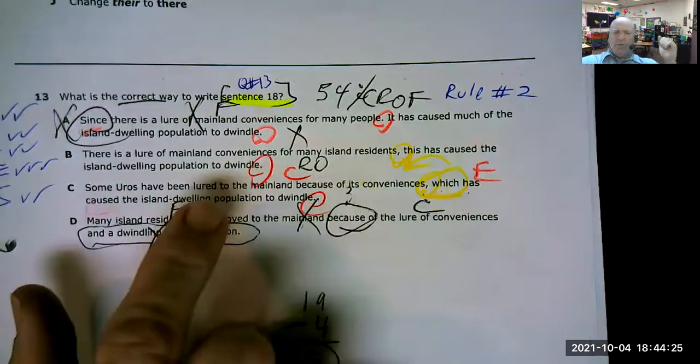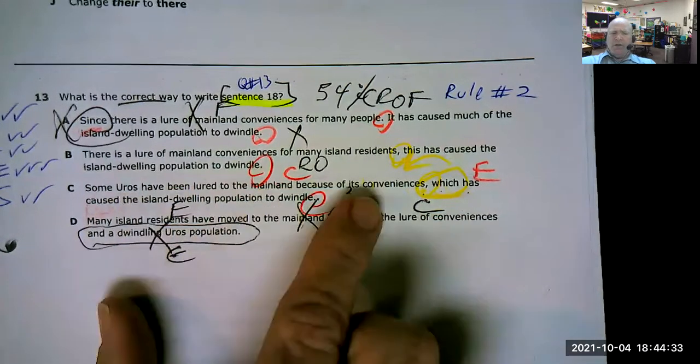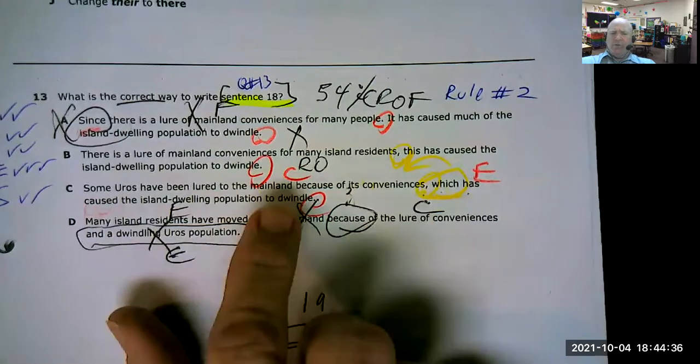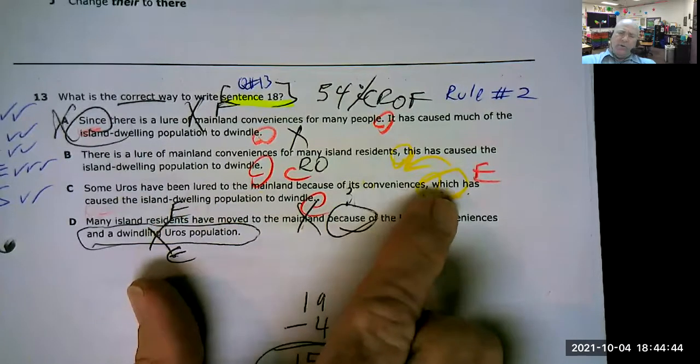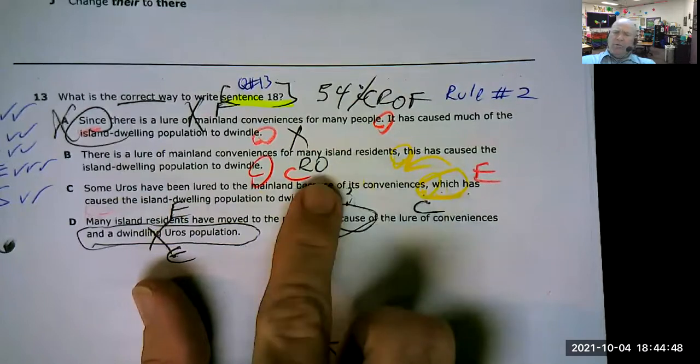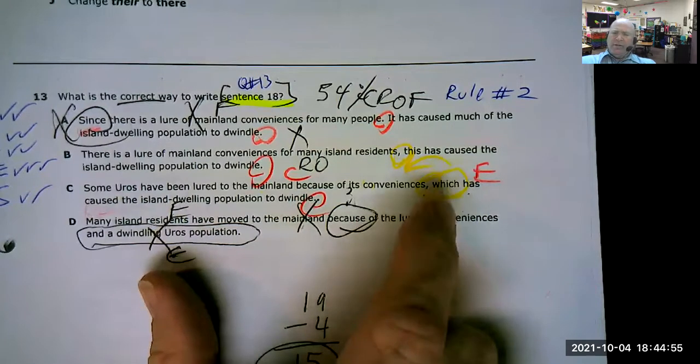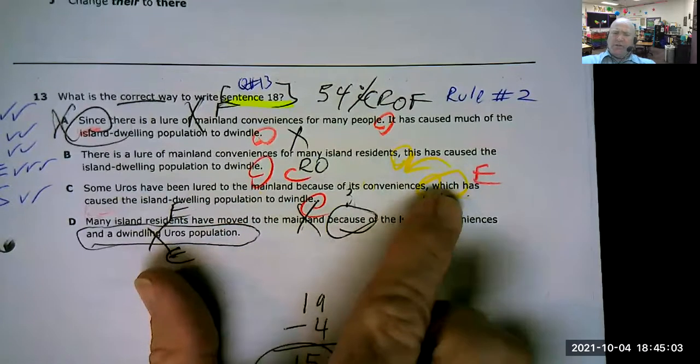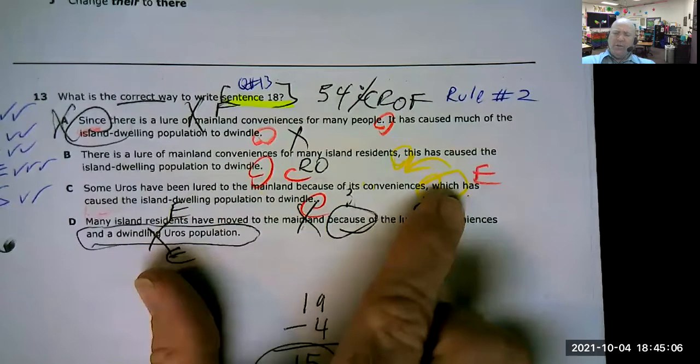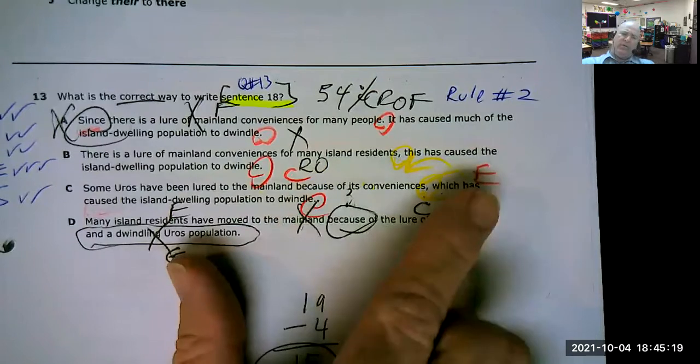Capital sum, capital Uros, have been lured to the mainland because of its conveniences comma, which has caused the island population to dwindle. Okay, so a lot of times when you use a comma with which you're either telling more about the first thing, or a result of that first thing, and so the result is has caused the island population to dwindle. So that one can be okay. A comma with a which, usually a which is the kind of which that's not the one that's wicked from the west, but the one that's going to give you a little bit more information that's either a result of the first part or giving you more information about the first part.